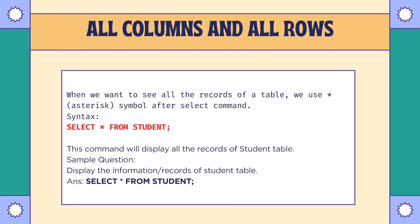To see all columns and all rows from a table, we use the star symbol, also known as the asterisk symbol. We use this command to see all the information from a table: SELECT * FROM student — here 'student' is the name of the table. This command will display all the information from the student table. For an employee table, we write SELECT * FROM employee.